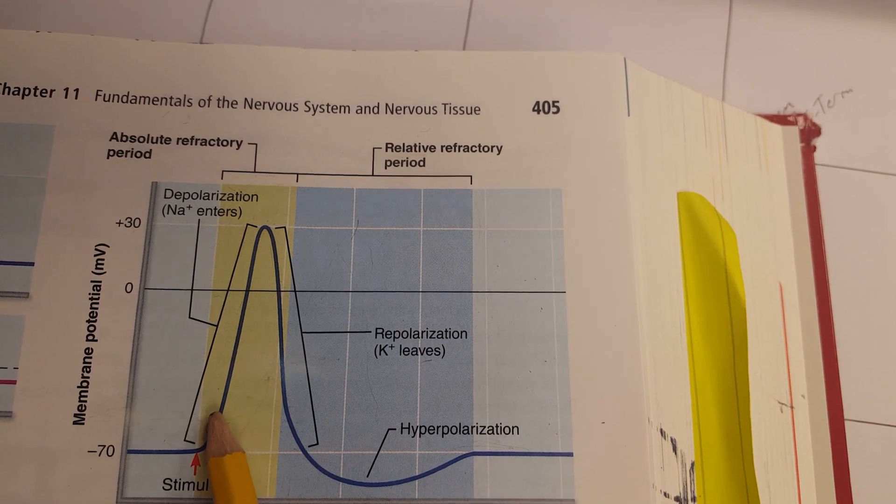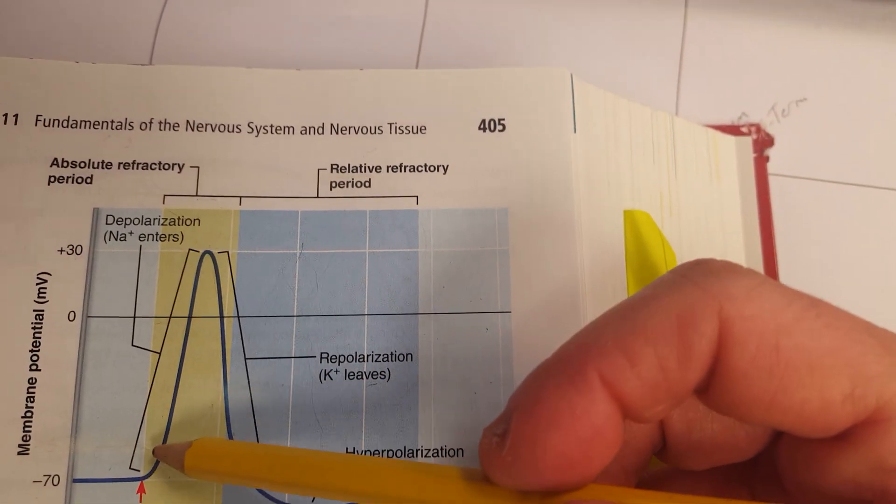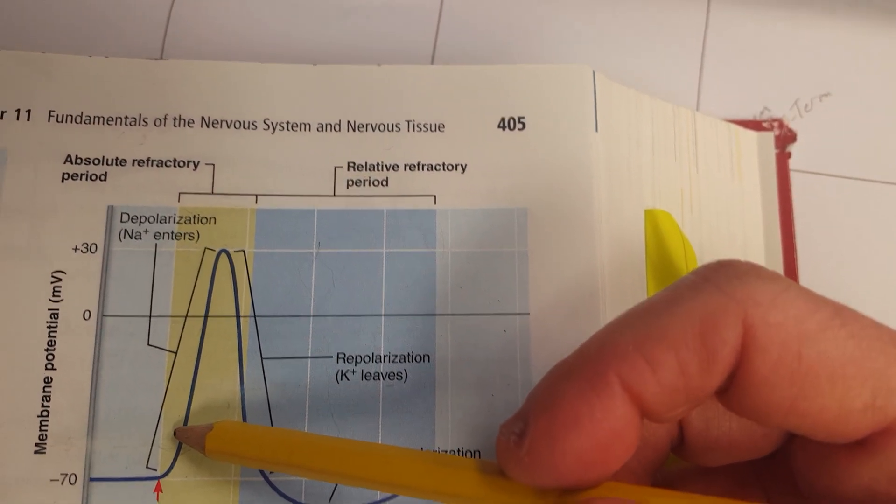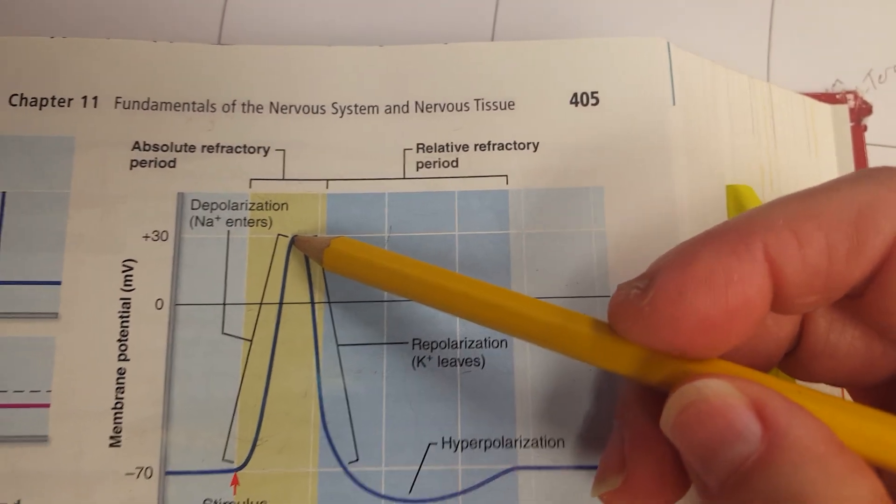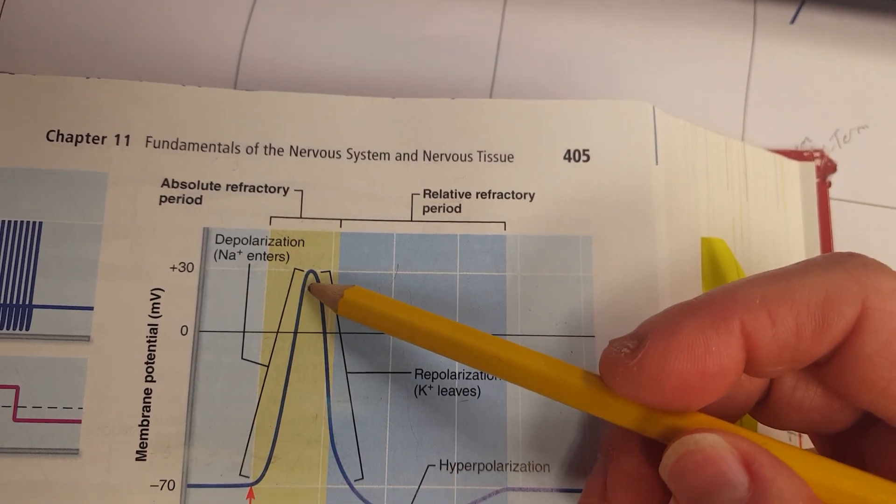So we have to reach threshold at negative 55 millivolts in order for depolarization to occur, where we go from negative 55 millivolts all the way up to positive 30 millivolts, and that is shown here. The depolarization phase is shown here.